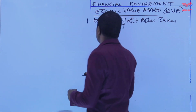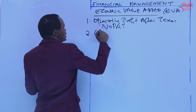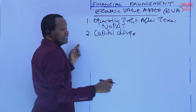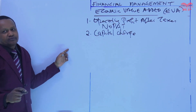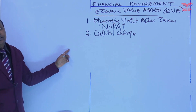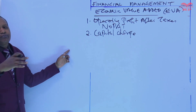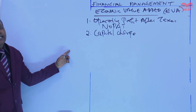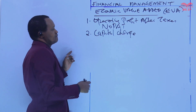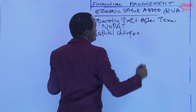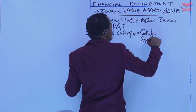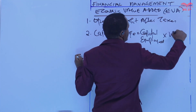Number two is to calculate the capital charge. How do we calculate the capital charge? We calculate the capital charge by multiplying the company's capital employed by its weighted average cost of capital. Capital charge equals capital employed times the weighted average cost of capital.